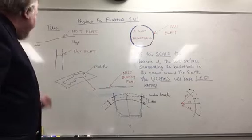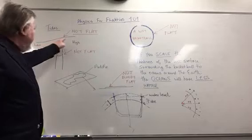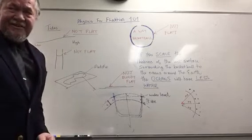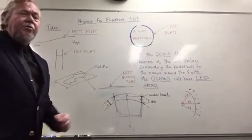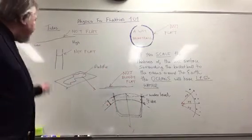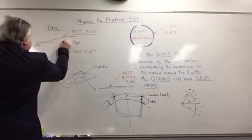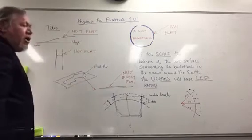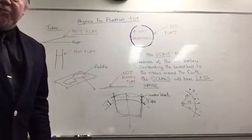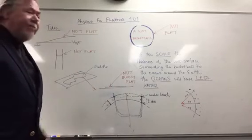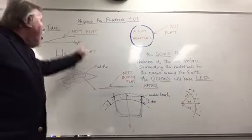Example number one: tides. Notice here we have low tide and high tide. At low tide, all the water's gone from the beach — where did it go? If you represent that on a diagram, you can see the water accumulates somewhere else. It doesn't just disappear. So: low tide, high tide — not flat.